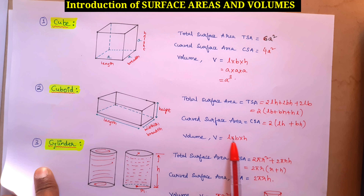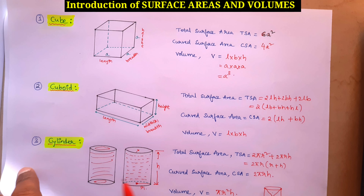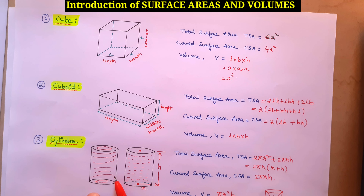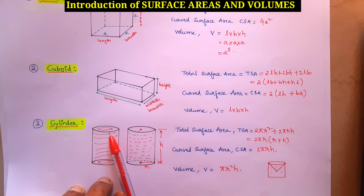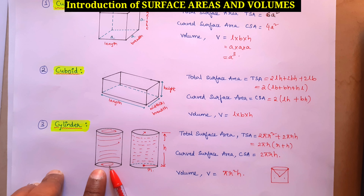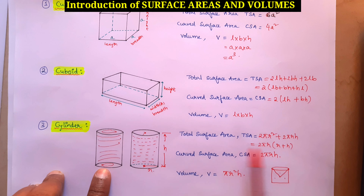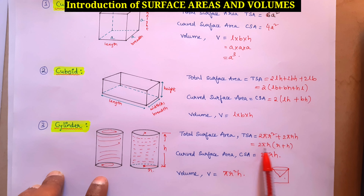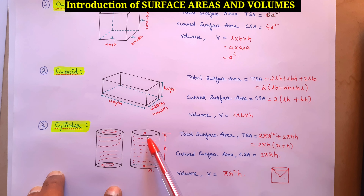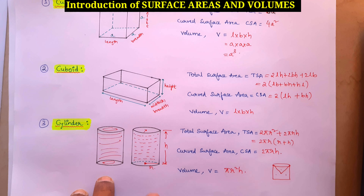For cylinder: total surface area includes top and bottom circles, giving 2πR² + 2πRH = 2πR(R + H). Curved surface area, excluding top and bottom, is 2πRH. Volume = πR²H.